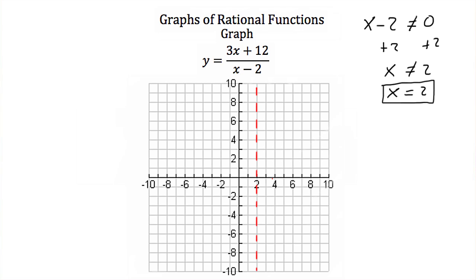The degree of my numerator is 1 and the degree of my denominator is 1. So since they're equal, my horizontal asymptote lies at the ratio of my leading coefficients, or y equals a over b. Well my a is 3 and my b is 1, so my horizontal asymptote is the line y equals 3.